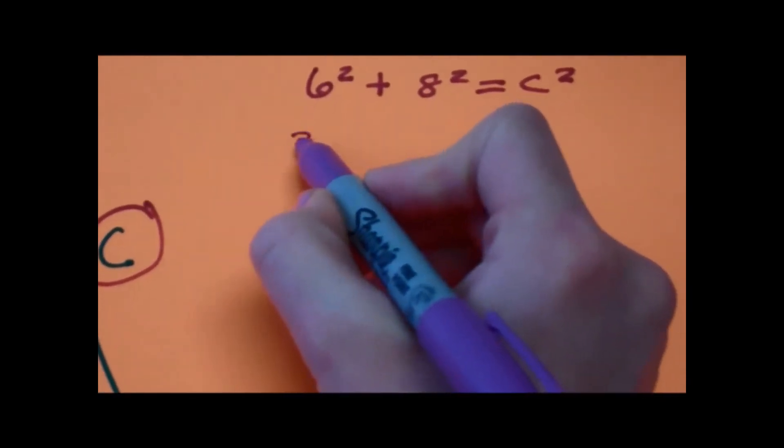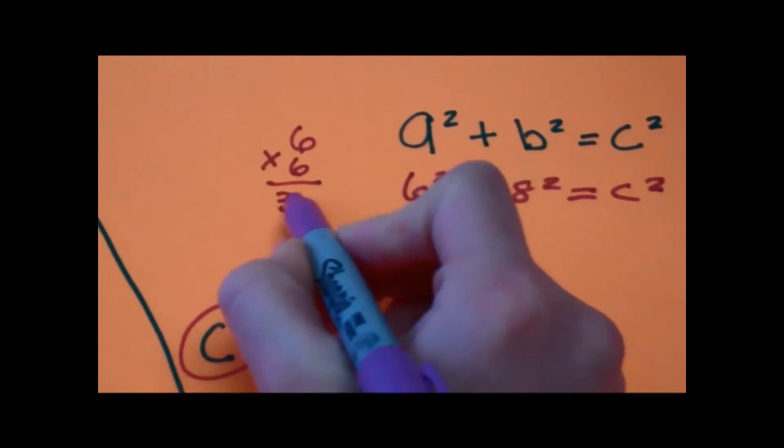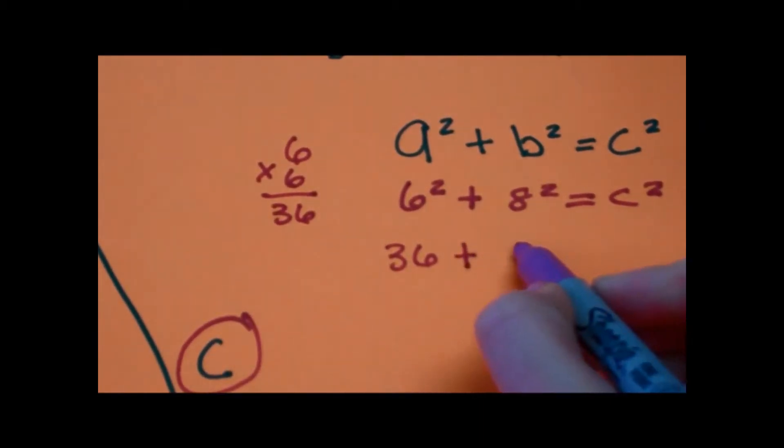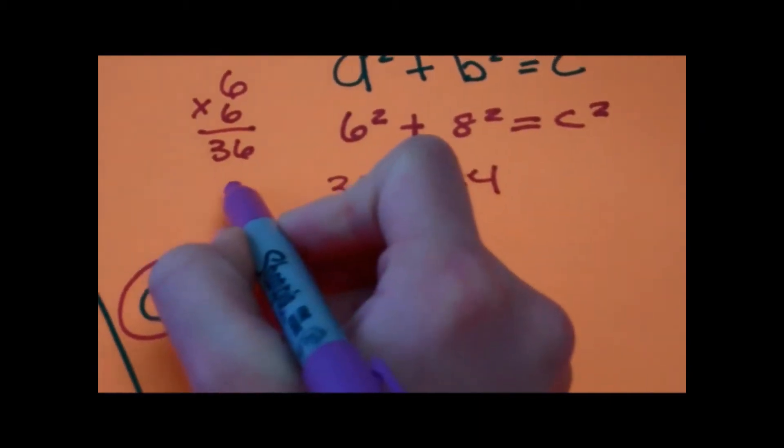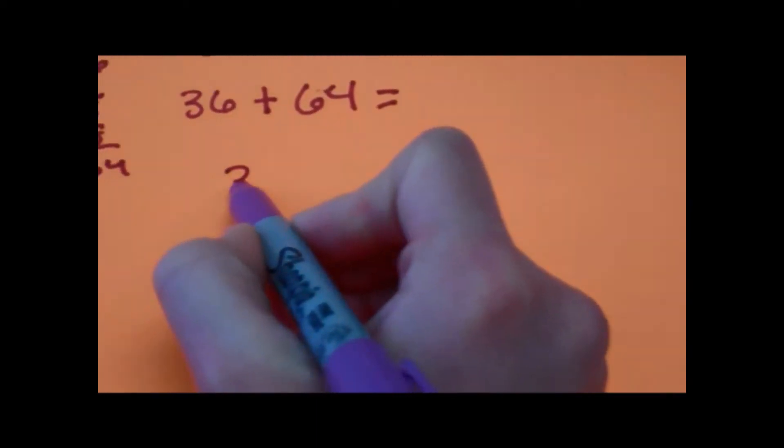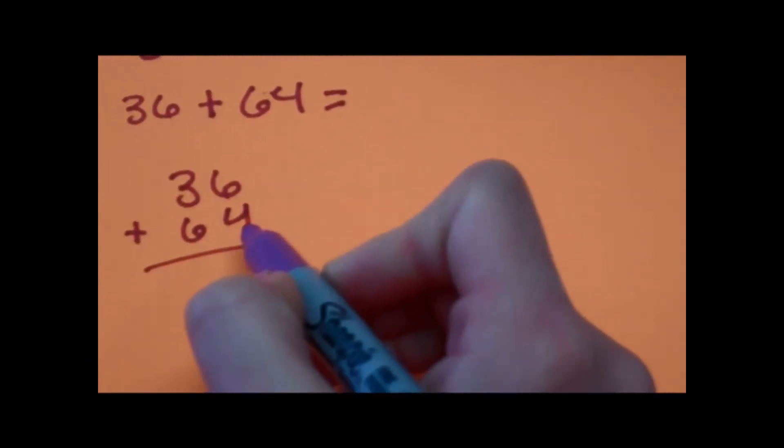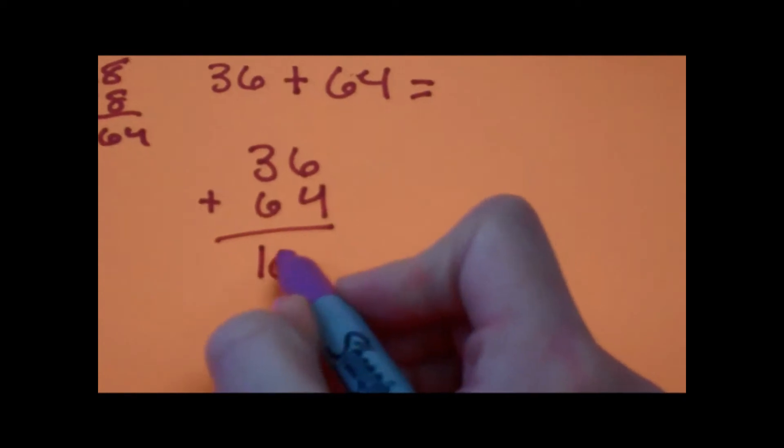6 squared equals 36, which is 6 times 6. And 8 squared is 64, which is 8 times 8. 36 plus 64 equals 100.